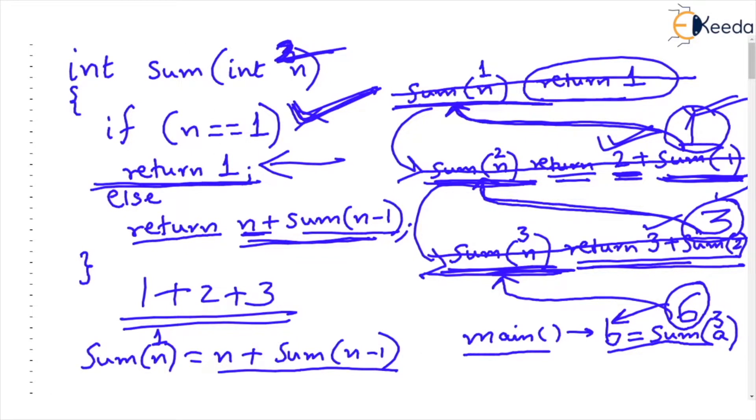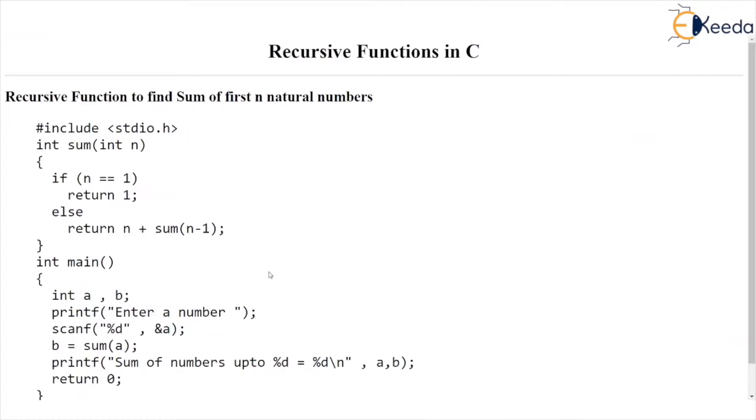I hope this problem of finding sum of n number is very clear and ultimately when we get back the answer in main we will print the answer as sum of numbers up to percent d is percent d. So the output is going to be sum of numbers up to 3 is equal to 6. That's it. This was the example of finding sum of first n natural numbers.